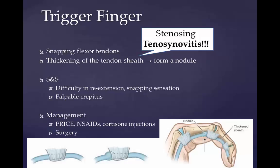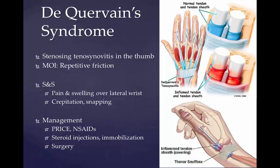De Quervain syndrome, also known as blackberry thumb, texting thumb, or gamer's tenosynovitis, is an inflammation of the sheath surrounding the two tendons that control movements of the thumb. It is typically a result of repetitive movements and stress on the wrist. Postures where the thumb is held in abduction and extension, or rapid repetitive activities involving pinching, grasping, pulling, or pushing increase risk. Symptoms are pain at the radial side of the wrist, spasms, tenderness, an occasional burning sensation, swelling over the thumb side of the wrist, and difficulty gripping. Pain worsens with thumb and wrist movement and may radiate into the thumb and forearm. Treatment includes PRICE and NSAIDs, steroid injections, and possibly immobilization or surgery.